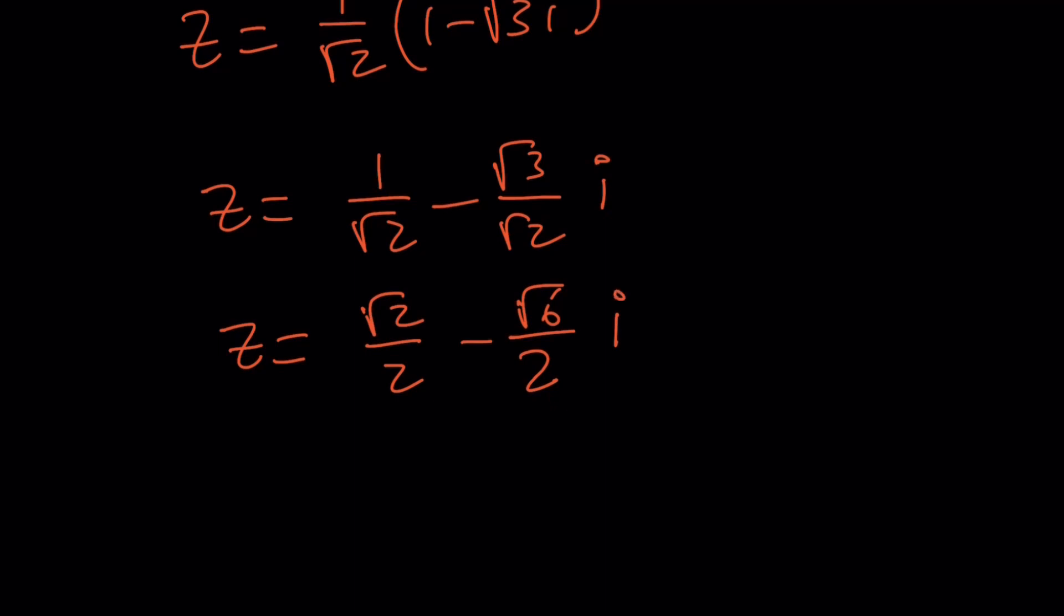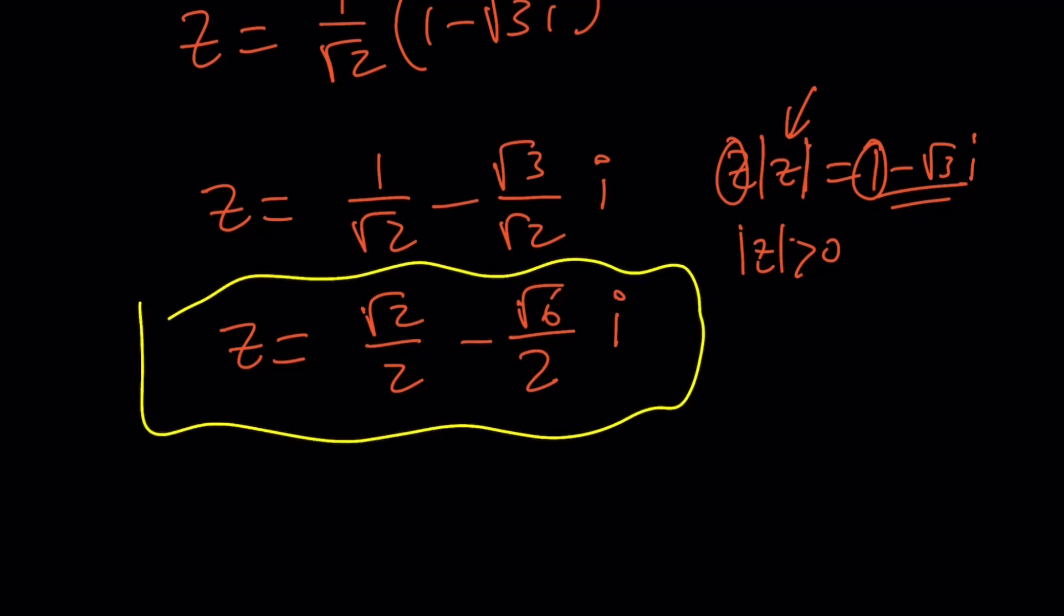Now, let me tell you something. Why didn't the other solution work? Because when you multiply z by absolute value of z, obviously the absolute value of z is not 0. So, absolute value of z is positive. And the result is 1 minus root 3i. So, when you multiply something by a positive quantity, you're getting a positive real part. So, the real part of z also has to be positive. That's why this is the only solution that works.